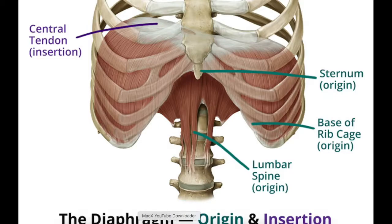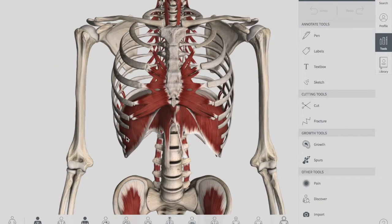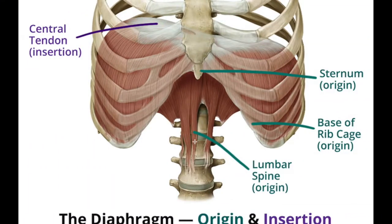We have two crura: the right crus and the left crus. The right crus arises from the sides of the bodies of the first three lumbar vertebrae and the intervertebral discs. The left crus arises from the sides of the bodies of the first two lumbar vertebrae and the intervertebral discs. So the difference is right = first three lumbar, left = first two lumbar.